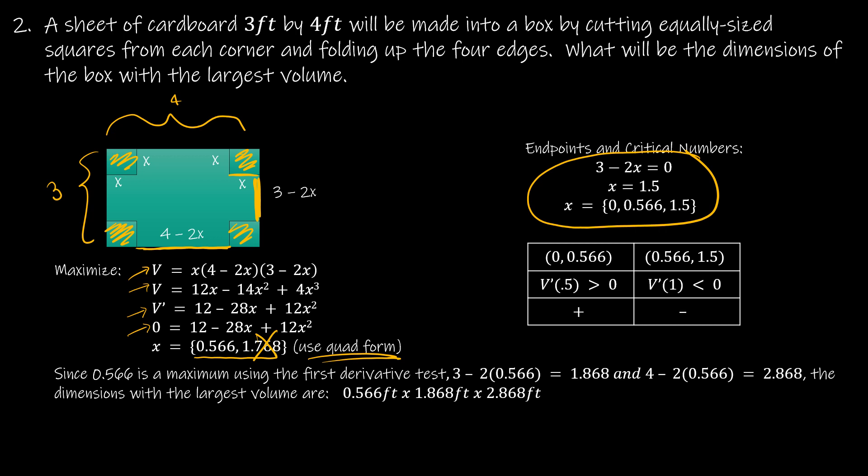So I can see that using my table, I did end up with a maximum at 0.566. I plugged it back in to find the values of 4 - 2x and 3 - 2x. So that gave me these dimensions for the largest possible volume.